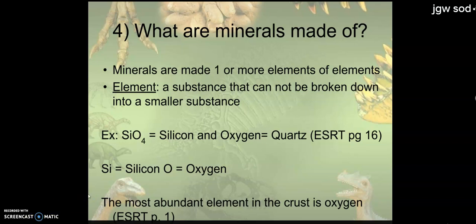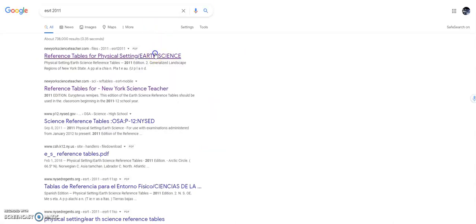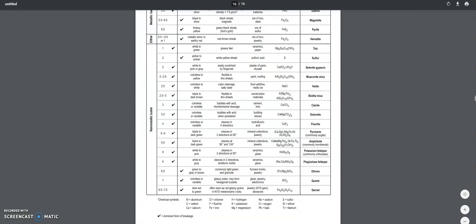So what are minerals made of? One or more elements. Now an element, if you don't remember from back to eighth grade's physical science class, elements are substances that cannot be broken down into smaller substances. So I'm not saying like elements like fire, wind, water. No. I'm talking about elements like silicon, oxygen, sulfur, potassium. Those are the fundamental building blocks of everything. So for example, SiO4, silicon and oxygen, they create the mineral quartz. Silicon is an element, oxygen is an element, quartz is our substance. And while I got you here, I'm going to pull up a reference table.